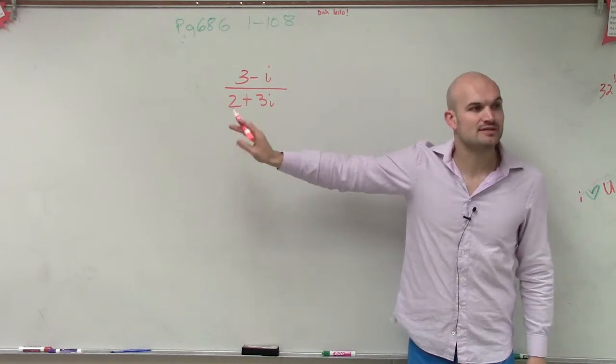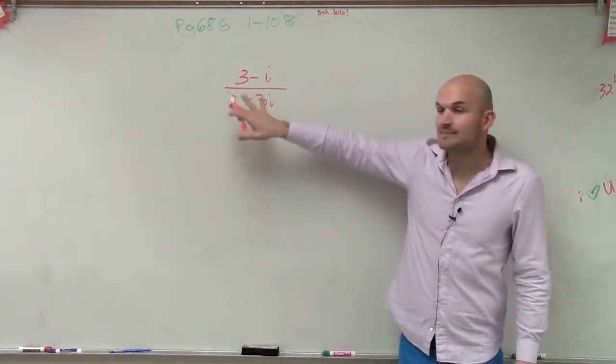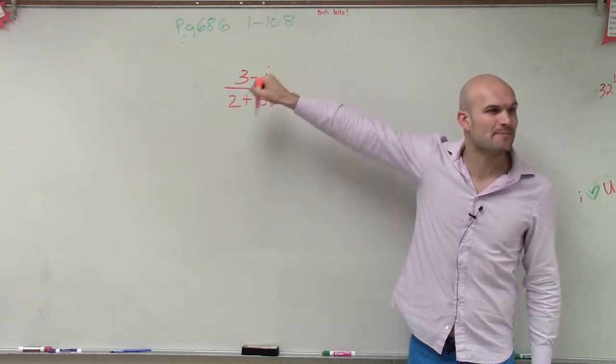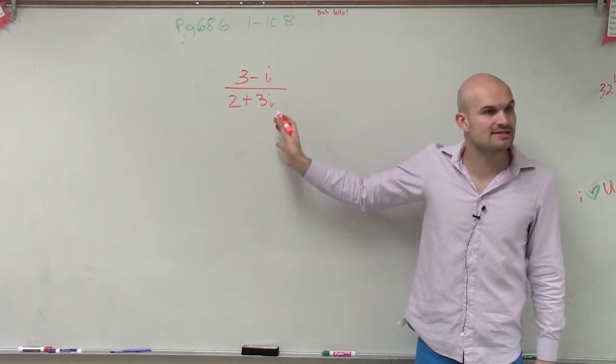we had to multiply by the conjugate to get the radical off the bottom. Well, the same thing, we can't have i. We can't divide by i because i is going to be our imaginary number. So when we want a simplified version, we want to get i off the denominator.